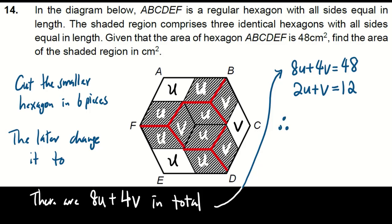The area of shaded region is 6U plus 3V, which is 3 times 2U plus V leading to 36.